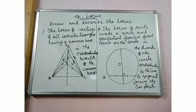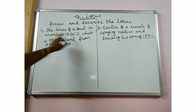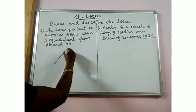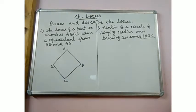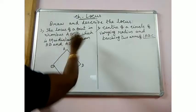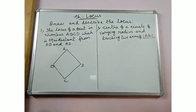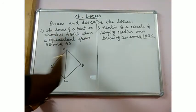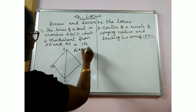The third situation: draw and describe the locus of a point in rhombus ABCD which is equidistant from AB and AD. Let me draw rhombus ABCD. You know that in a rhombus all sides are equal. A point equidistant from AB and AD lies on the bisector of angle BAD. In a rhombus, the diagonal bisects each angle. So the locus will be the diagonal AC. The locus of a point in rhombus ABCD equidistant from AB and AD is the diagonal AC.